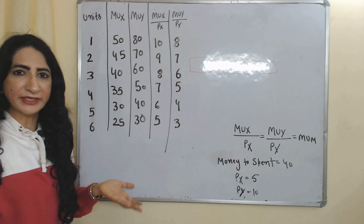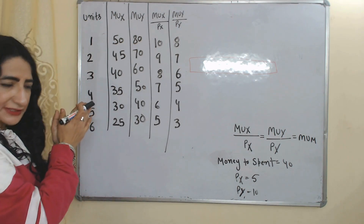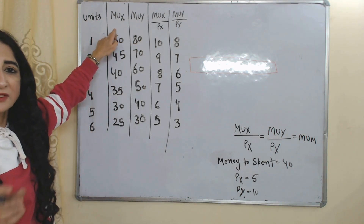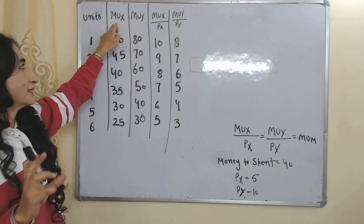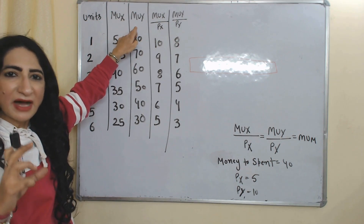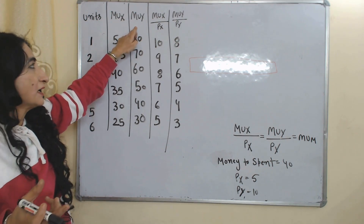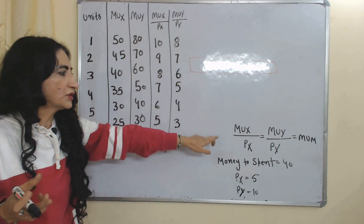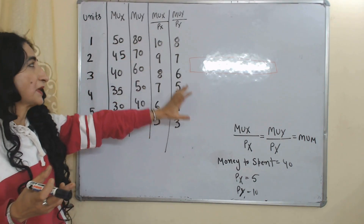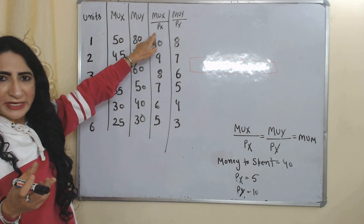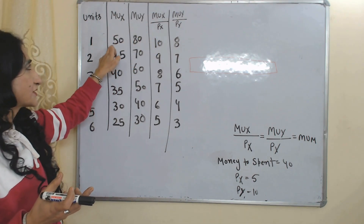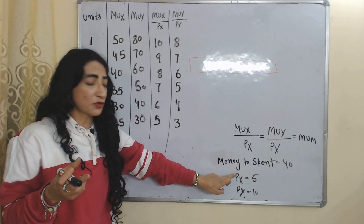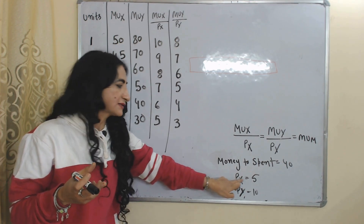We assume we have only two commodities X and Y. The first column has units, the second column has MUX — marginal utility of X — and the third column has MUY — marginal utility of Y. We need to calculate MUX over PX. To do so, we divide the marginal utility of X by the price of X. We assume the price of one unit of X is equal to 5.